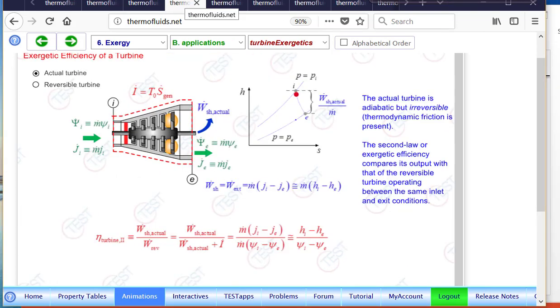So let's go ahead. Here is the schematic of the turbine showing the exergy inventory. Just what I went over is shown again here. J is the flow energy coming in and psi dot is the flow exergy coming in.